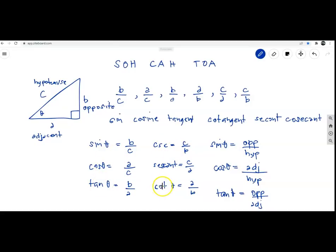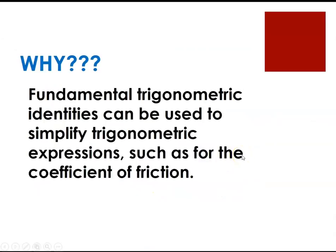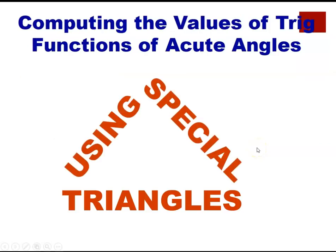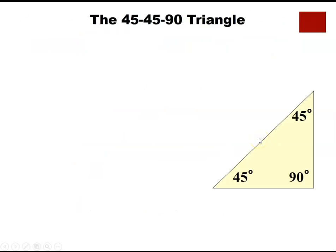Fundamental trigonometric identities can be used to simplify trigonometric expressions. For the right triangle: sine theta is opposite over hypotenuse, cosine is adjacent over hypotenuse, tangent is opposite over adjacent. Their reciprocals are cosecant (hypotenuse over opposite), secant (hypotenuse over adjacent), and cotangent (adjacent over opposite).